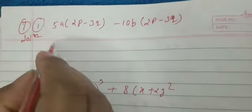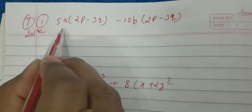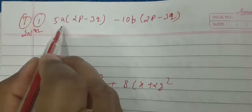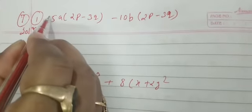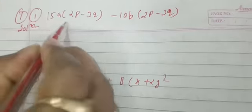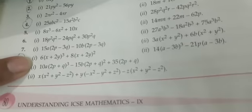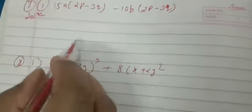Now question number 7(i). The question is 15A into (2P minus 3Q) minus 10B into (2P minus 3Q). We will think about what we can take as common.